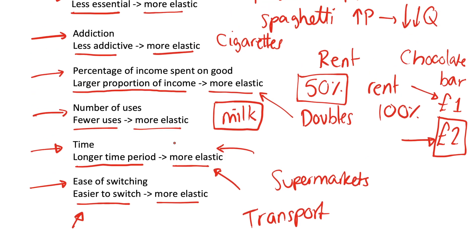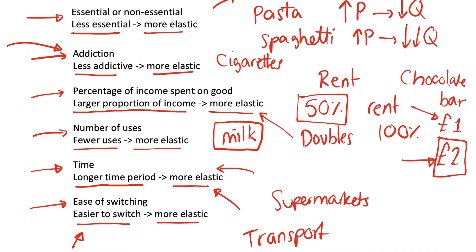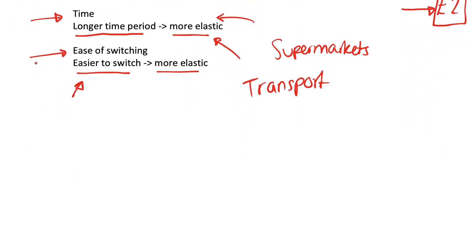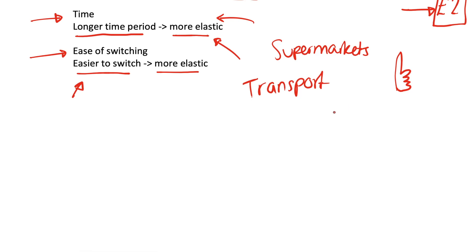And again, this can tie in with a lot of other things like addiction. Over time, you might find a way to overcome your addiction. Certain goods might not be as essential because you found alternatives for them and so on. So those are some factors affecting price elasticity of demand. I hope this video was somewhat useful. If it was, please do leave a like. Make sure to check out the playlist for more videos like this and subscribe to add some econ to your subscription feed.